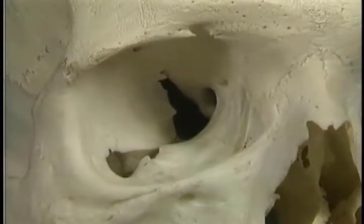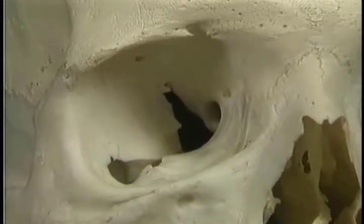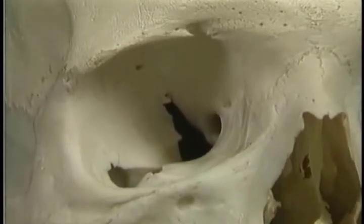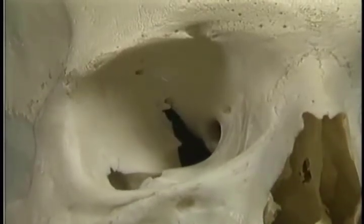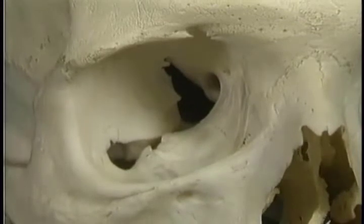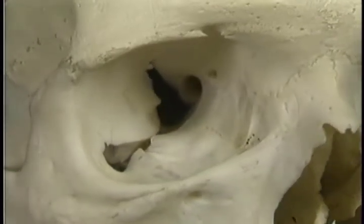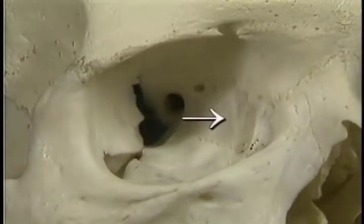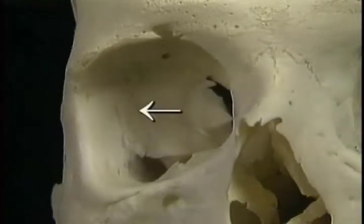This is the bony orbit, or orbital cavity. It's described as having a roof, a floor, a medial wall, and a lateral wall.